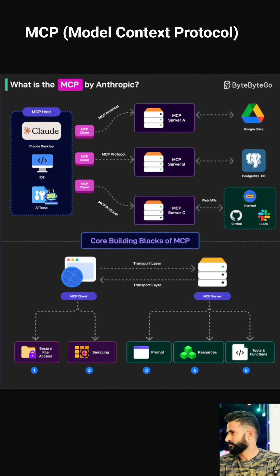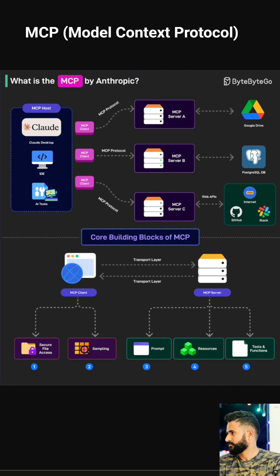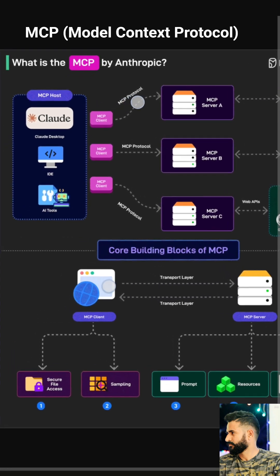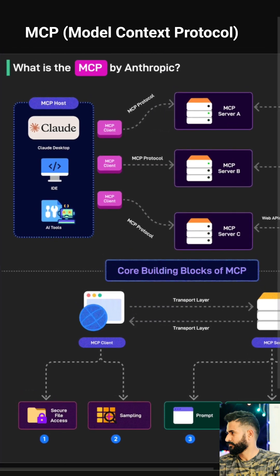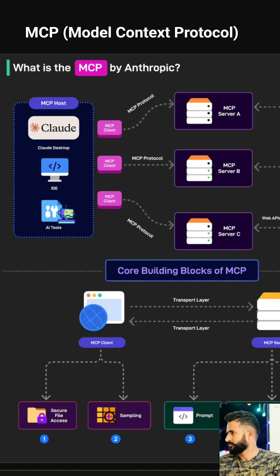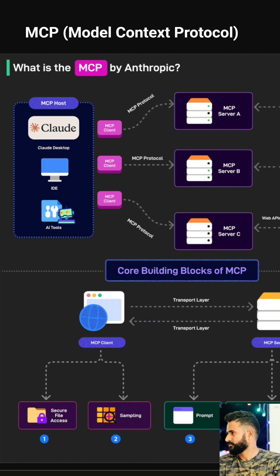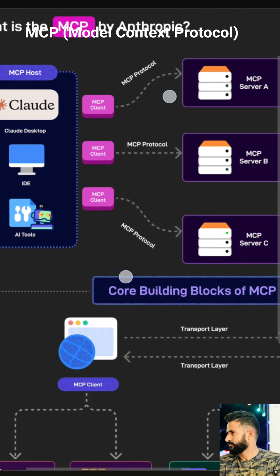Now let's zoom in on the core building blocks of MCP. Secure File Access allows Claude to securely access files on your computer or in cloud storage like Google Drive — it's like giving Claude a library card. Sampling allows Claude to extract specific information from large datasets or documents — it's like giving Claude a highlighter. The Prompt is the user's input, the question or instruction they give to Claude, and it's the starting point for the entire process.